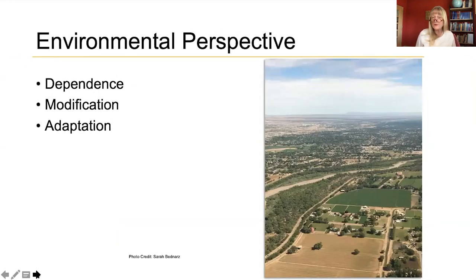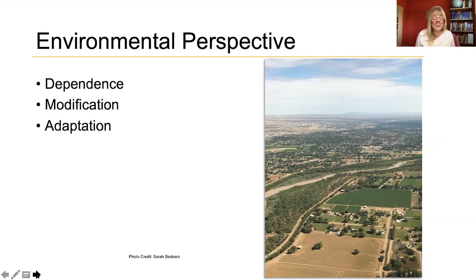But geographers also, more than any other discipline, look at the interactions between humans and the environments in which they live. Humans are only one part of the living system of Earth. We depend upon the environment to provide food, shelter, water, and a range of other natural resources. And we modify the environment to suit our needs — we drain swamps, cut down forests, alter waterways, and create new ones — all with an impact on the various ecosystems upon which we depend. We as humans also adapt to the environments in which we live, and many cultural practices are the result of that adaptation.